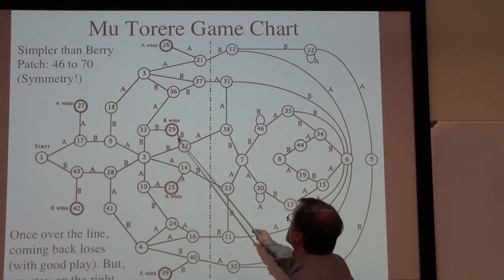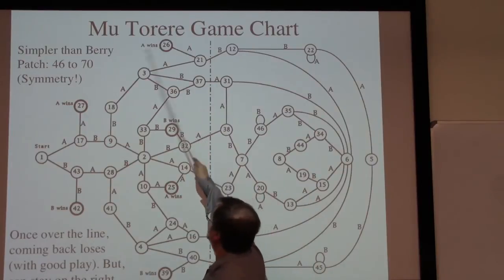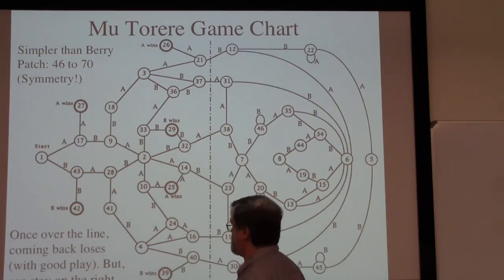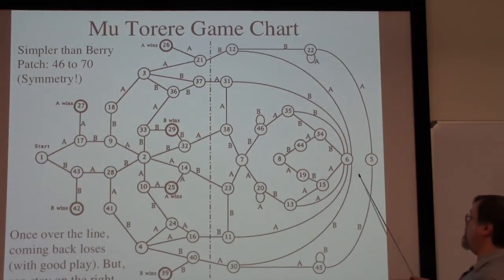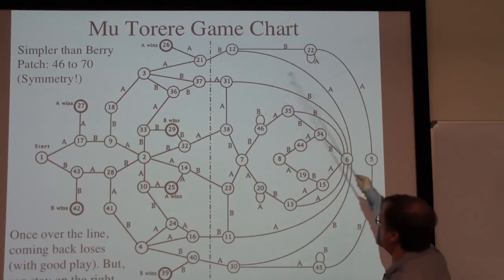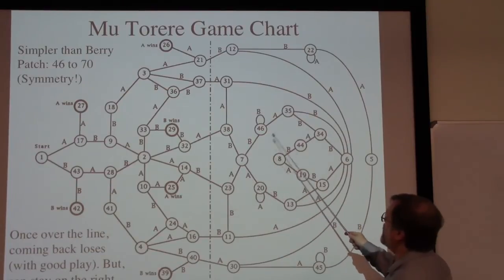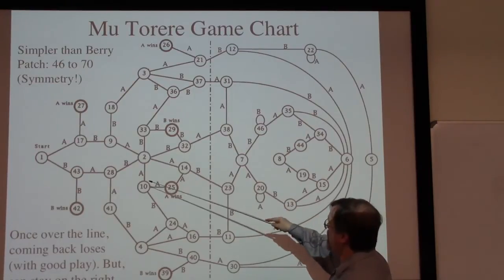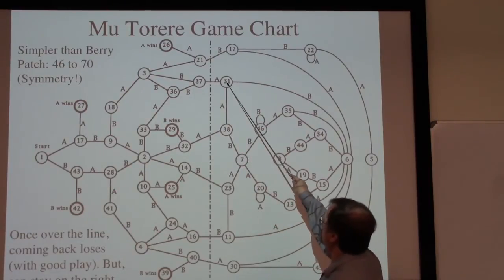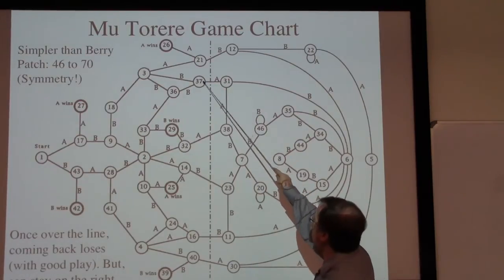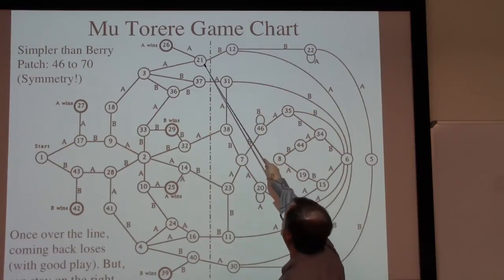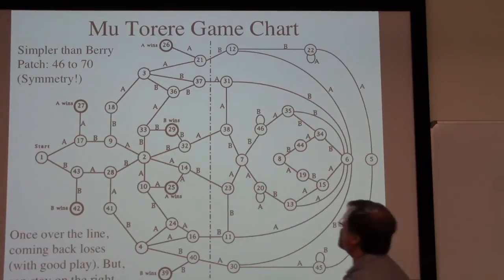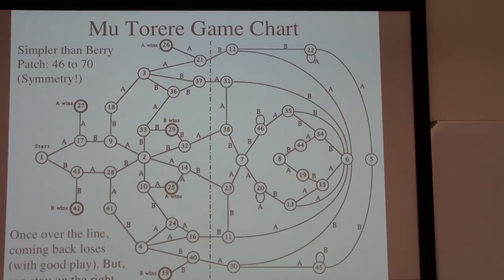Here are the various winning positions — 1, 2, 3, 4, 5, 6 — and they're all on the same side as the start. On the other hand, if we get over to this side, this is the draw side: there are no winning positions over here and there is never any force to come back. So if I'm in position 38, I could play A and come over to the side where all the wins are, but I could stay over on the draw side by moving up here. With good play, coming back across that line will always result in the other player winning.